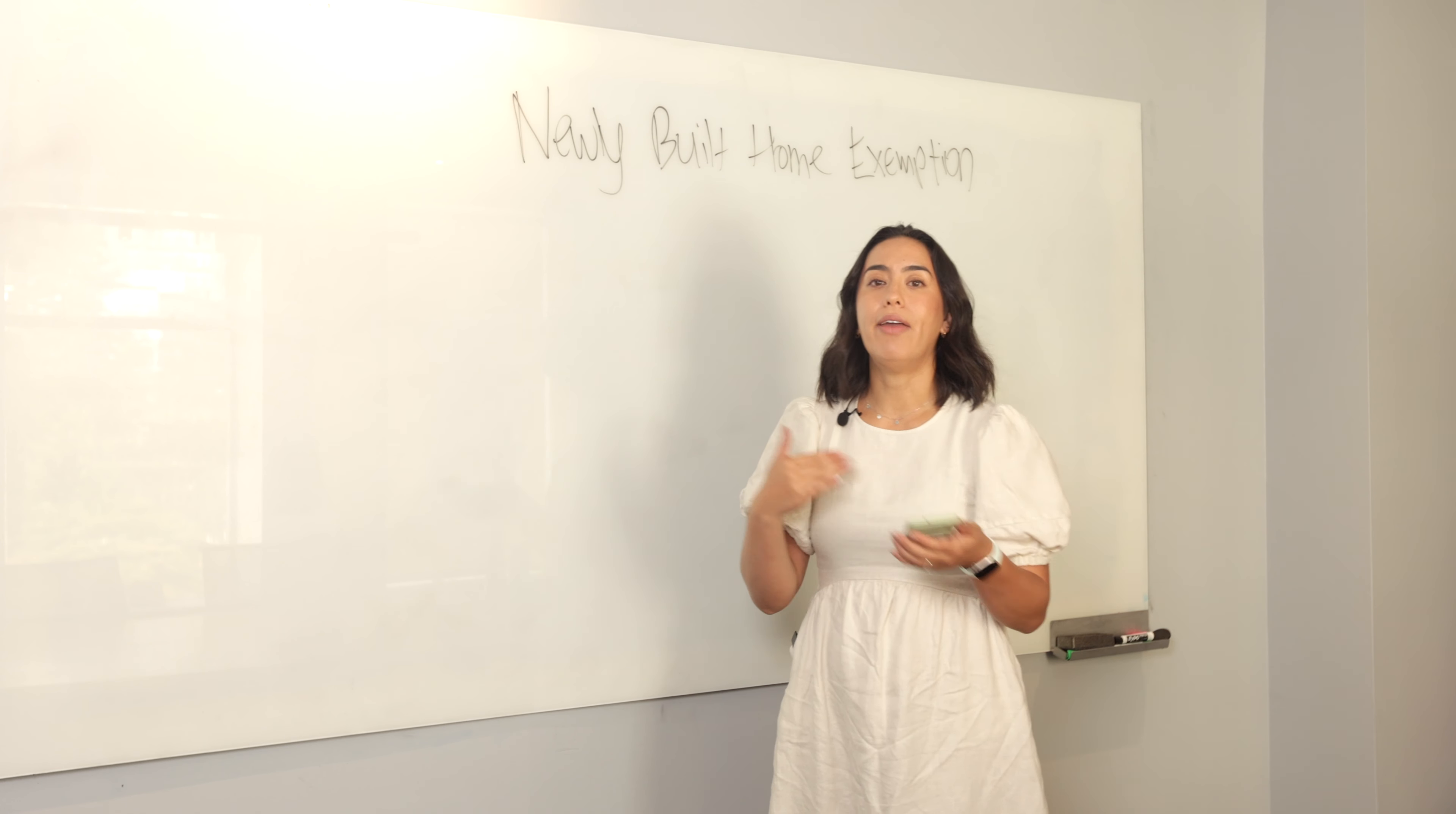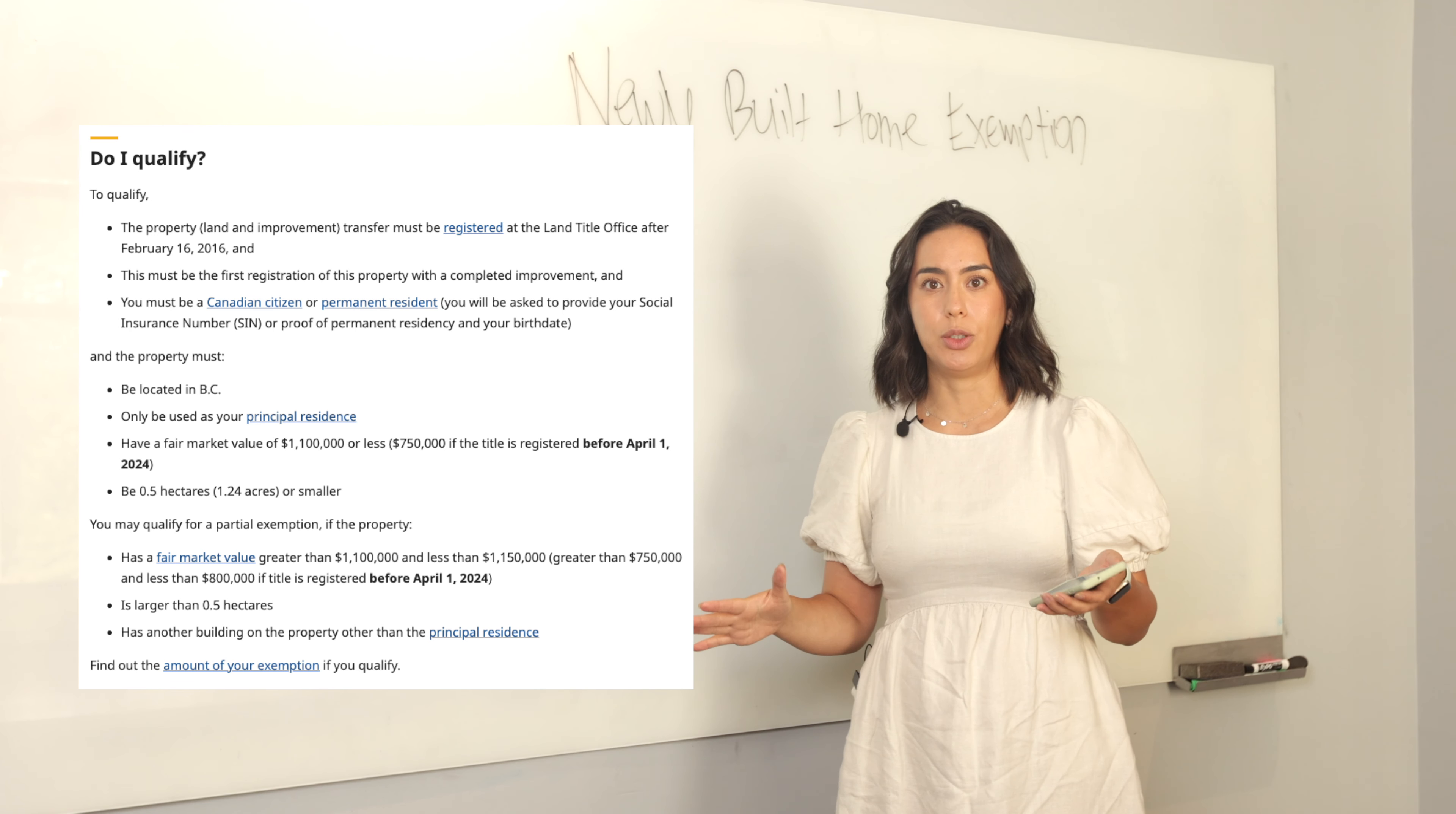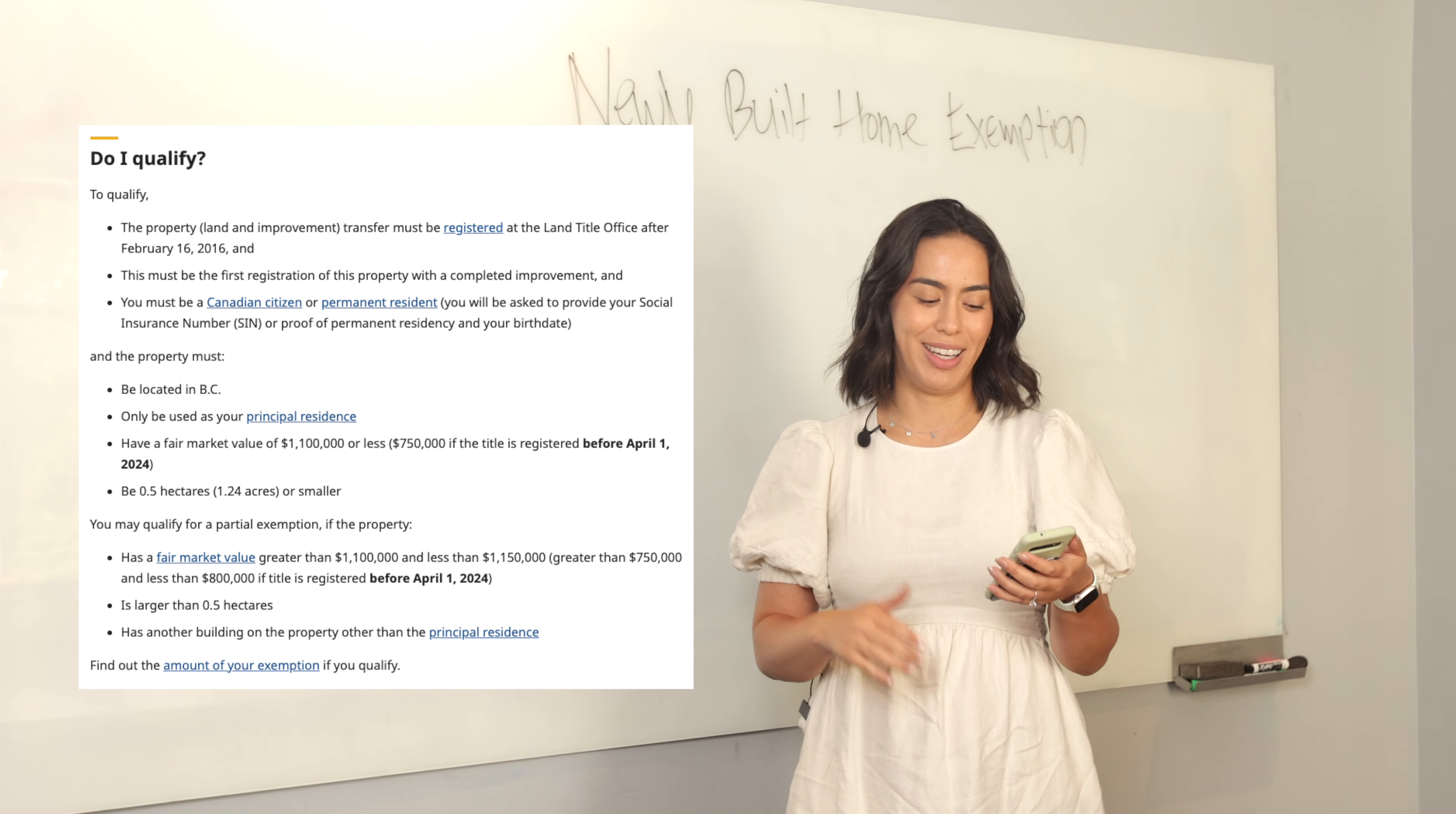In terms of whether you are going to qualify for the property transfer tax exemption, you have to qualify and the property has to qualify. You can refer back to the government website. If you qualify, it has to be the first registration of this property with a completed improvement. So again, newly built home. You have to be a Canadian citizen or a permanent resident, and the property must be located in BC. Again, it can only be used as your principal residence. These kinds of exemptions do not apply to investment properties.